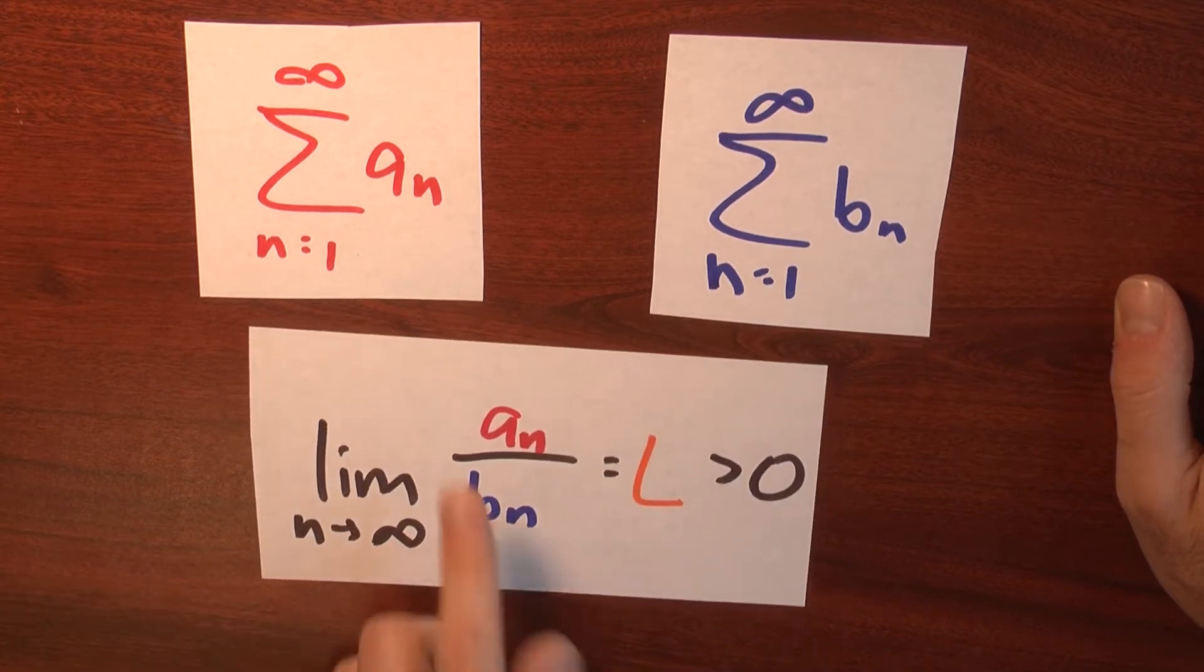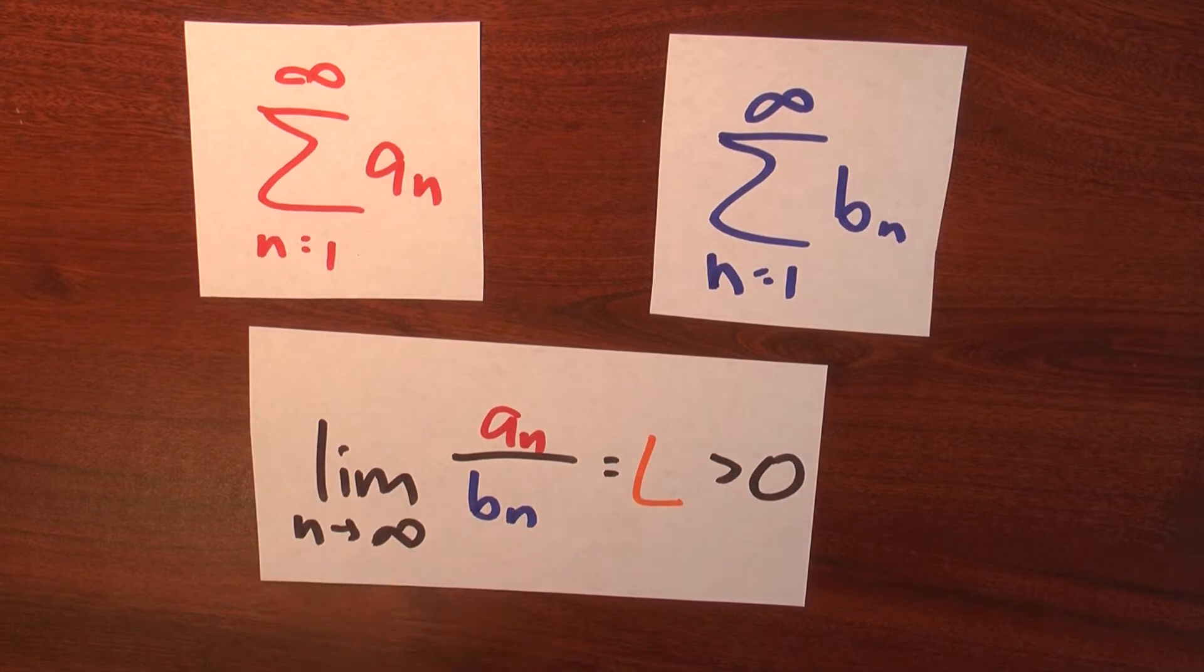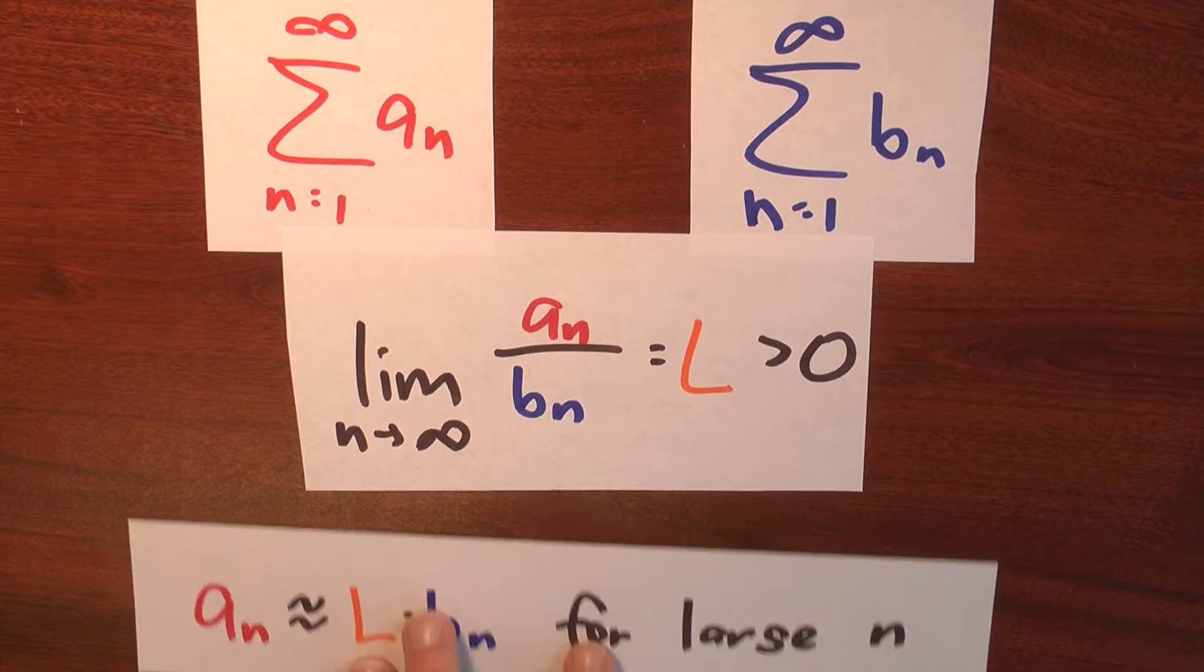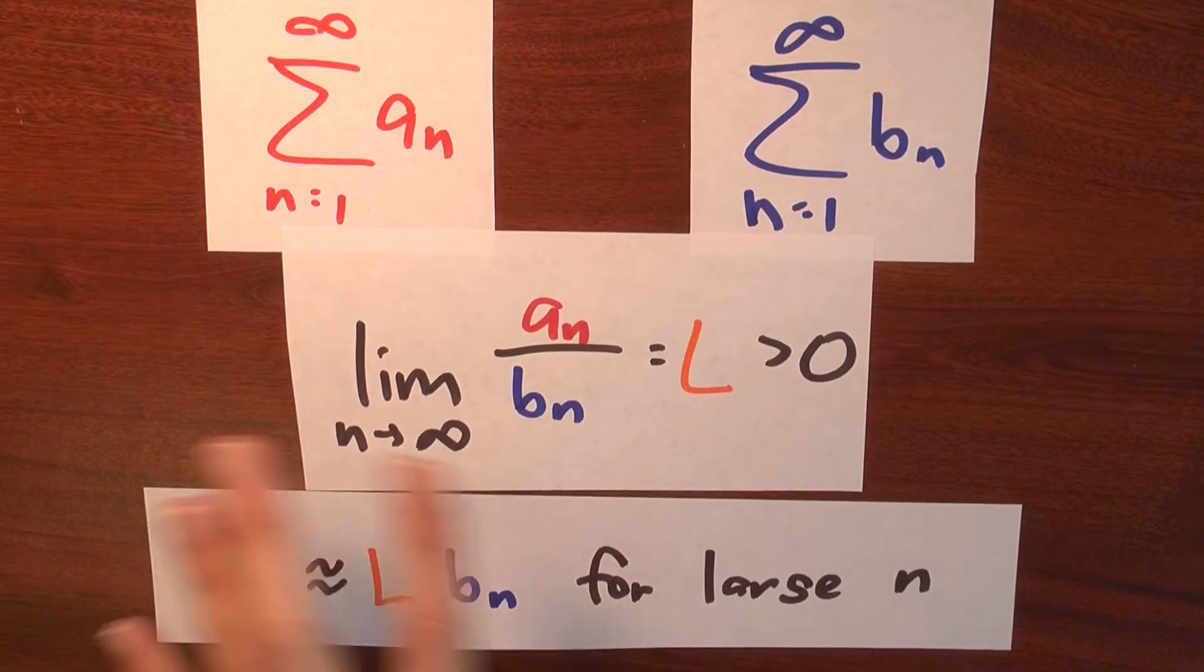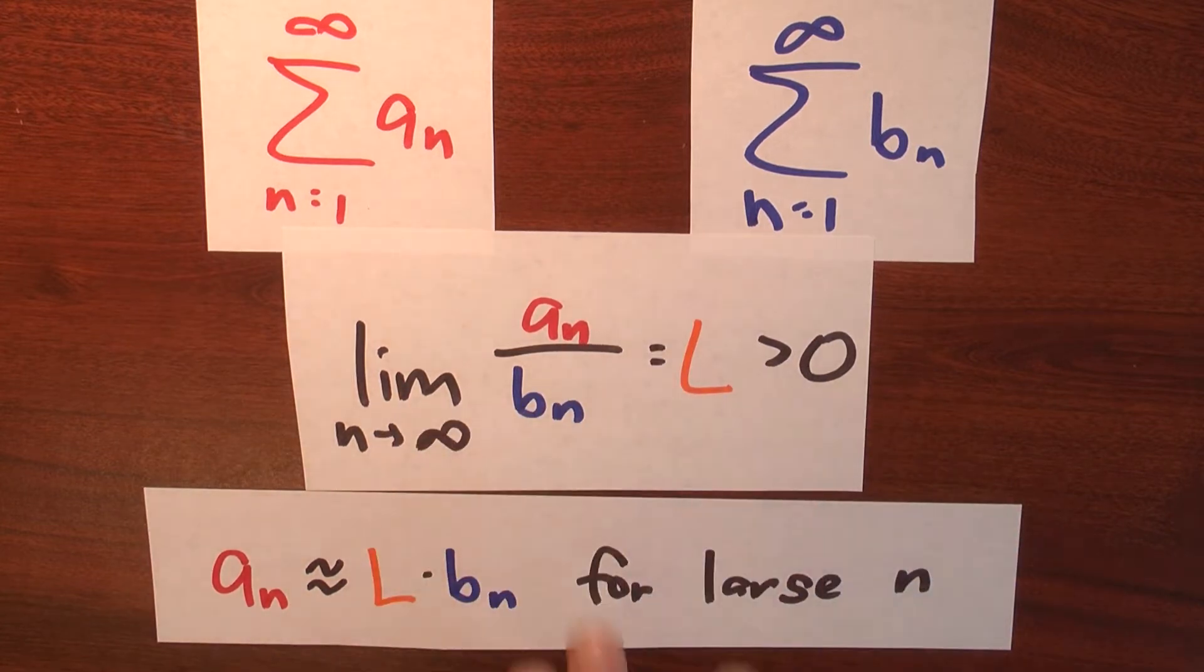But even though the limit of a sub n is zero and the limit of b sub n is zero, it could be that the limit as n goes to infinity of a sub n over b sub n might be some number L, which is positive. What does that really mean? One way to think about that is that a sub n and b sub n are almost multiples of each other. Like a sub n is almost a multiple of b sub n, at least when n is really big.